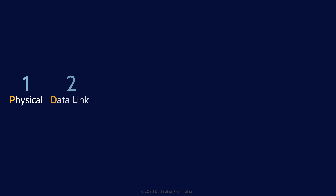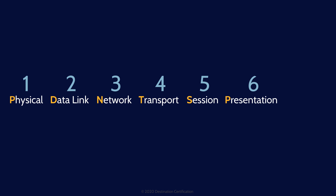The seven layers of the OSI model — you need to memorize them. Layer 1: Physical. Layer 2: Data Link. Layer 3: Network. Layer 4: Transport. Layer 5: Session. Layer 6: Presentation. And Layer 7: Application.